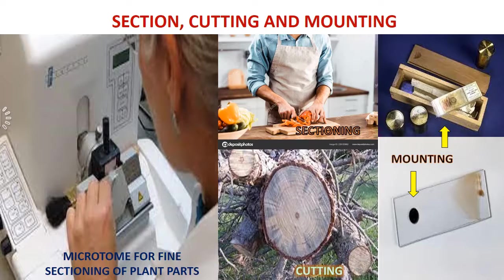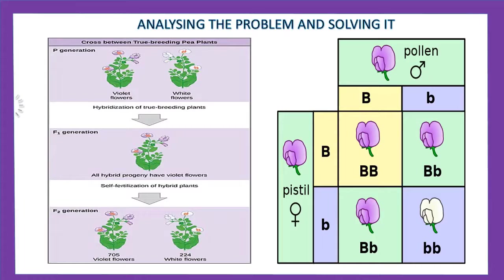Sectioning, cutting and mounting of plant parts are clearly shown here with the help of pictures. To get thin sections of plant parts, a microtome instrument is used. In botany, physiological, genetical, embryological, anatomical, biotechnical and other problems are solved through experiments in the laboratory.